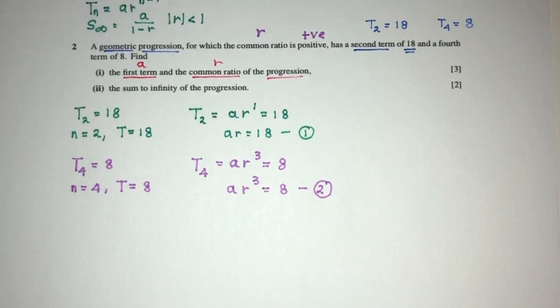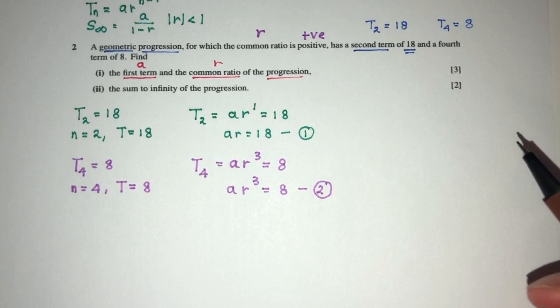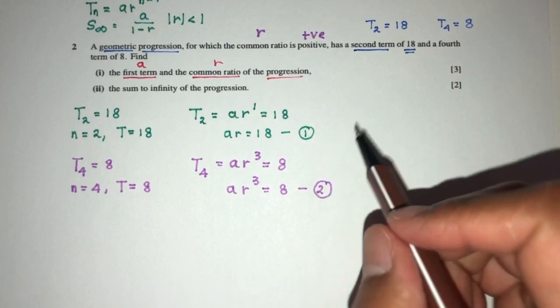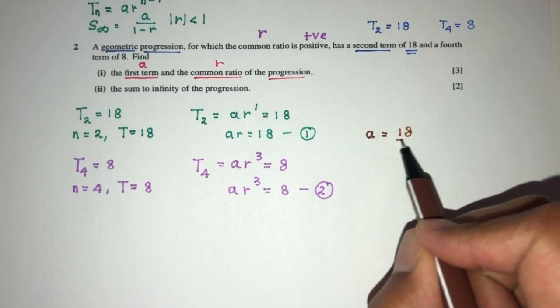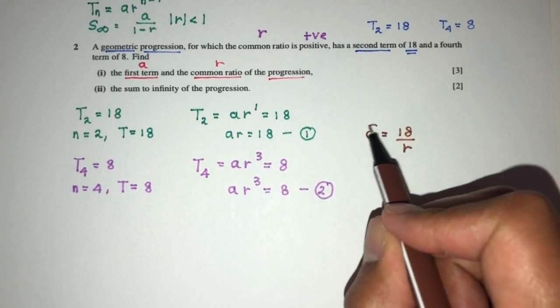Now, when you have two equations, we have two unknowns. We are trying to solve this equation simultaneously to find the value of a and r. So, let's try this. What can I do here? Let's think. I can do, let's do a is equal to the value of 18 divided by r. That's the first step.